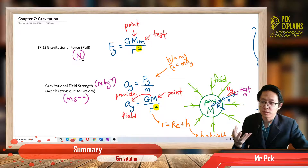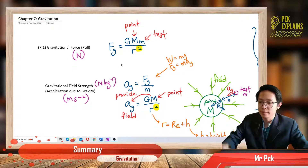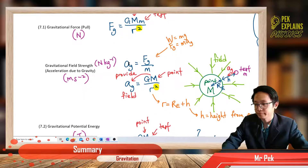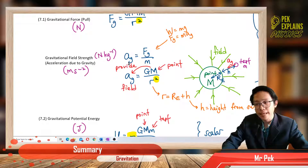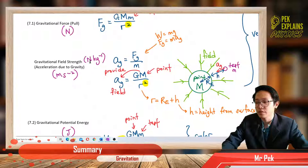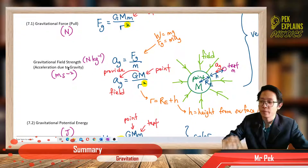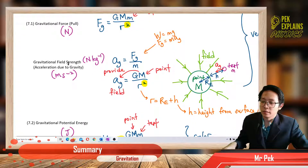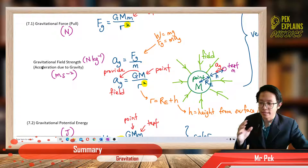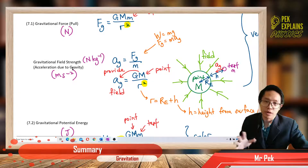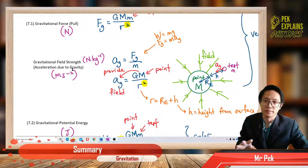The unit of force is of course Newton. Next is the gravitational field strength. Gravitational field strength is also called acceleration due to gravity. They are the same thing.